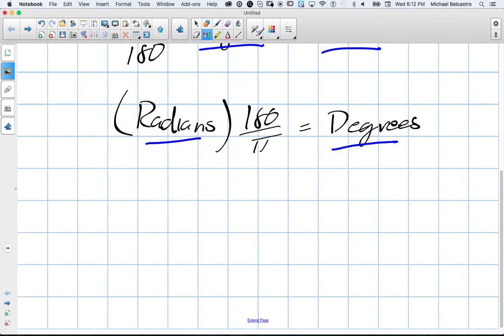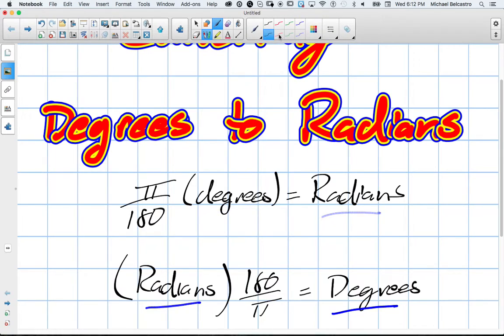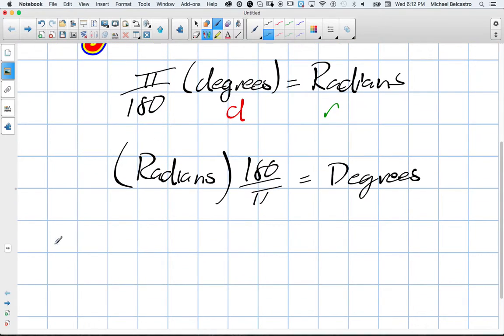We can call this d and this r. So we can remake this formula so it's easier to memorize. Think of it like d times π over 180 equals r, and vice versa, r times 180 over π equals d.